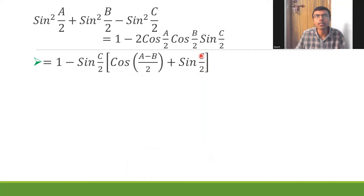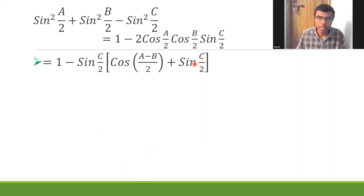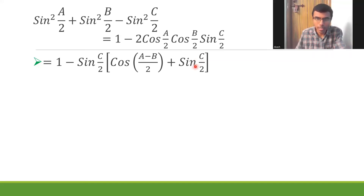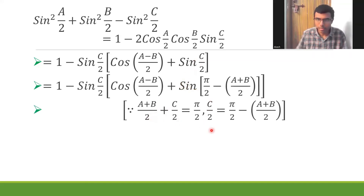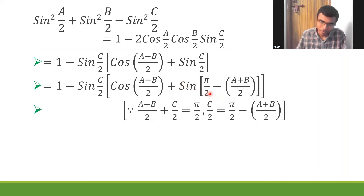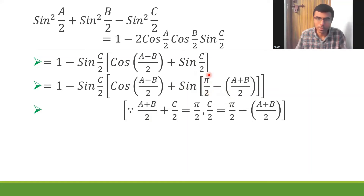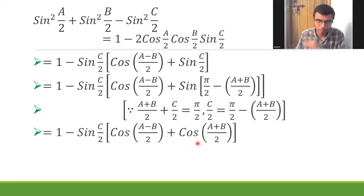Now I want to convert sin(c/2) inside the bracket to something involving a and b. Using the condition again: c/2 = π/2 - (a+b)/2. So sin(c/2) = sin(π/2 - (a+b)/2) = cos((a+b)/2). This is the second time I'm using that condition. So inside the bracket I now have cos((a-b)/2) + cos((a+b)/2).